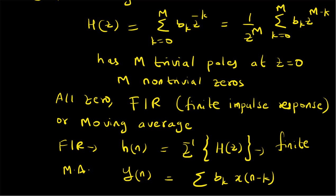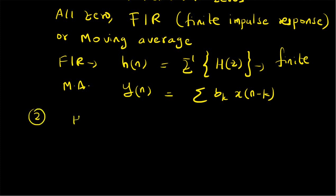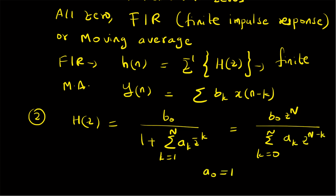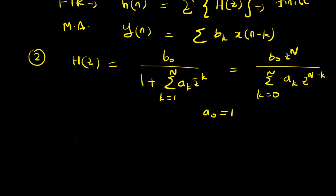The second special case is where H(z) = 1 / [1 + summation k=1 to N of a_k · z^(-k)], noting there is a constant b_0 in the numerator. This can be rewritten as b_0 · z^N divided by summation k=0 to N of a_k · z^(N-k), where a_0 = 1. In this case the system has N trivial zeros at z=0.